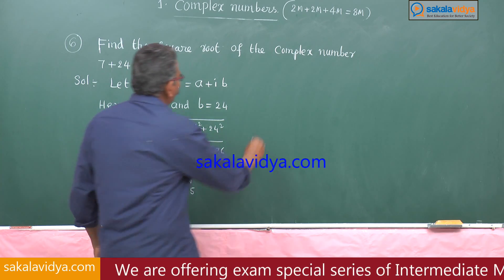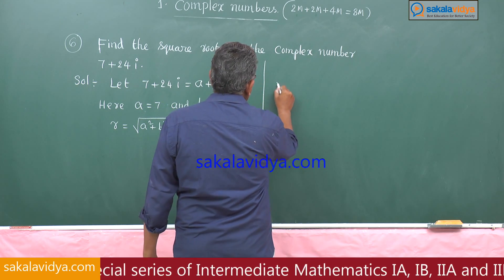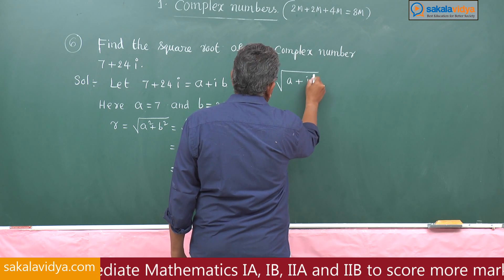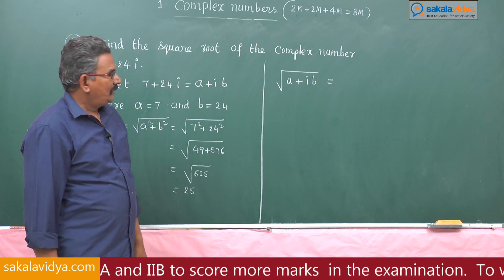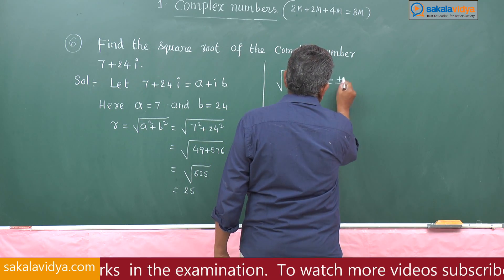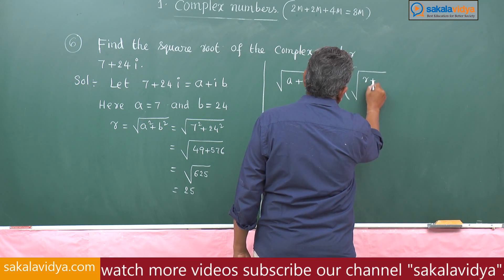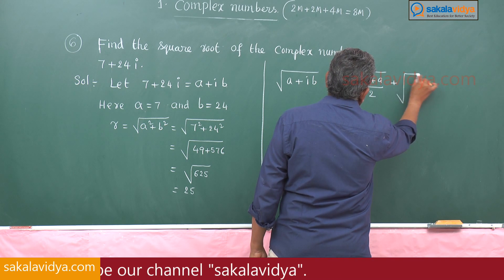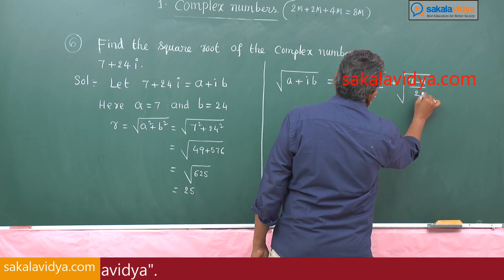Now, the square root of a plus ib is given by the formula: root of (r plus a)/2 plus i times root of (r minus a)/2.